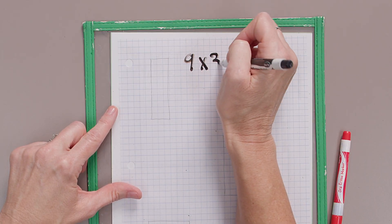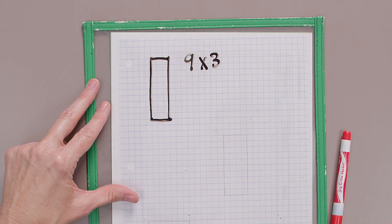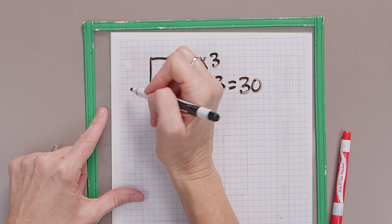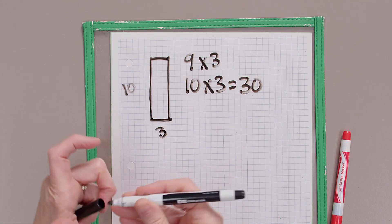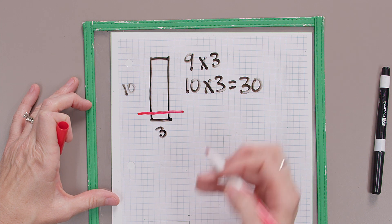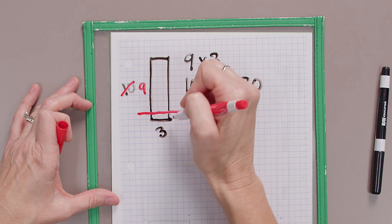We're going to use the area model and think about a ten by three rectangle. Because I want to solve nine times three, but I could draw a ten by three first. I know that ten times three equals thirty, and I'm going to use what I know to help me get to what I don't know. So this is a ten and this is by three. I know that nine groups of three is one less than ten groups of three, so I'm going to slice off that last group of three. Now I have a nine by three, and I'm going to use my knowledge of thirty — the whole area is thirty.